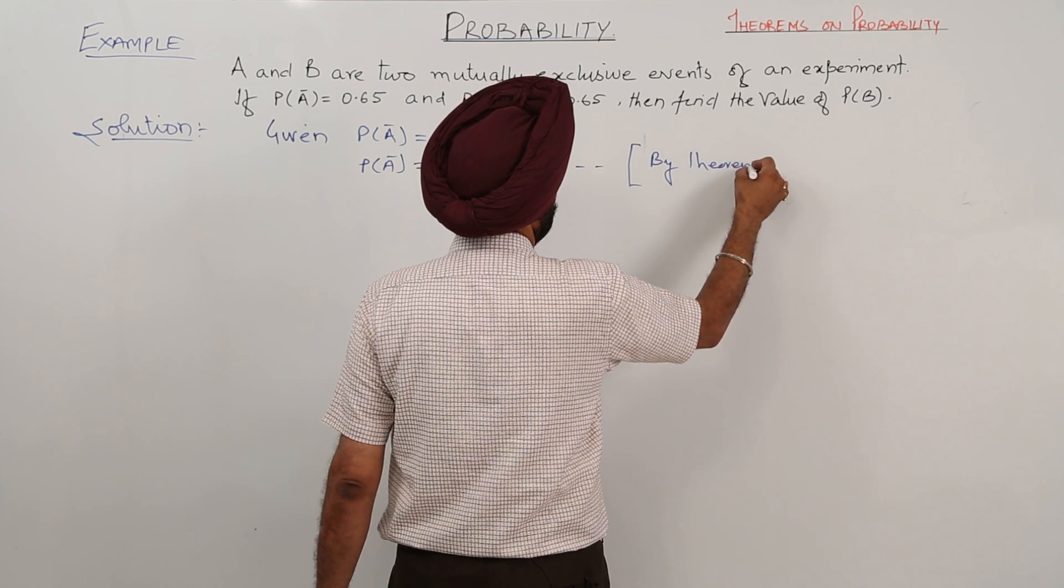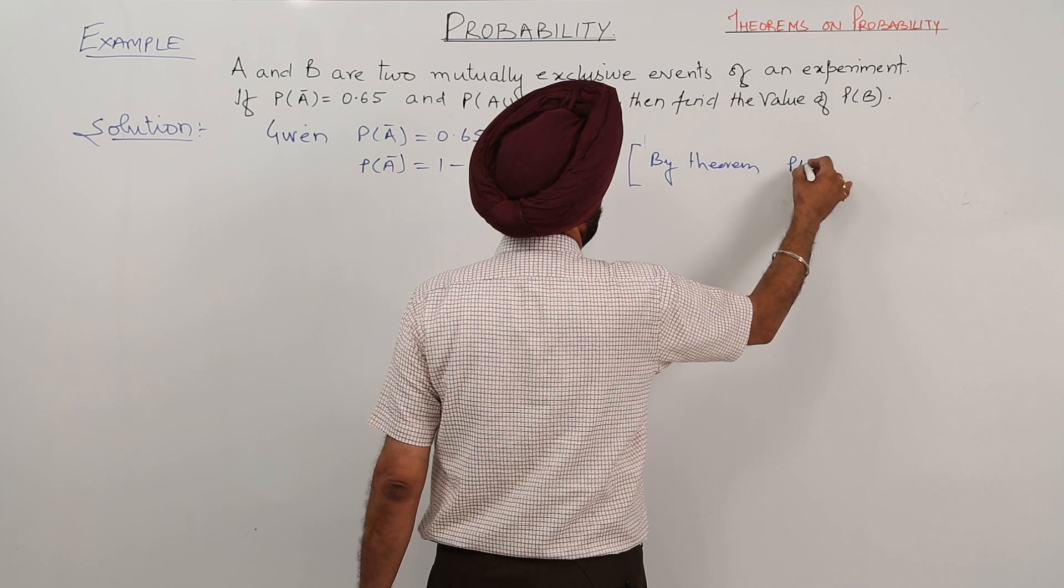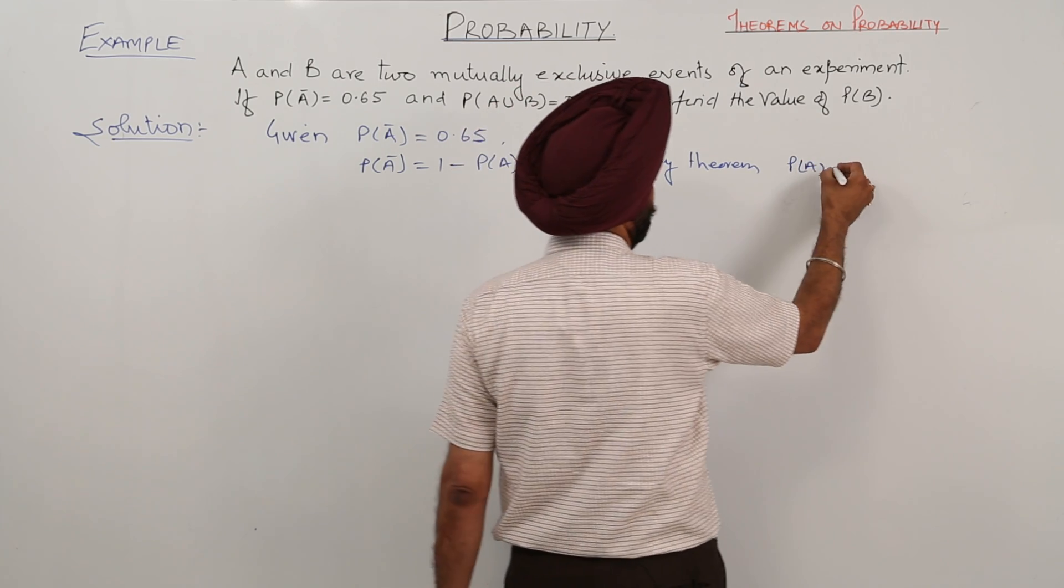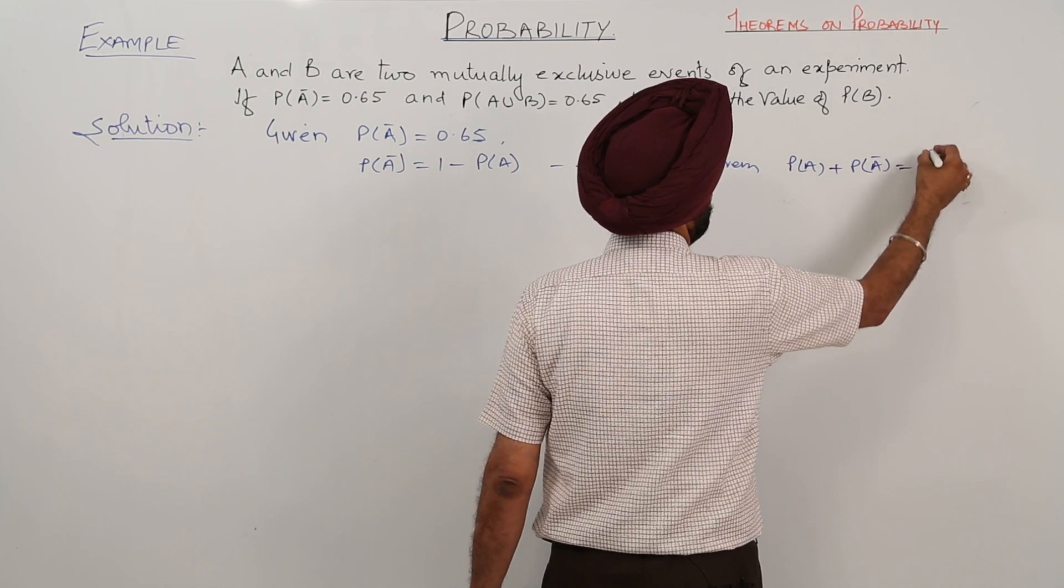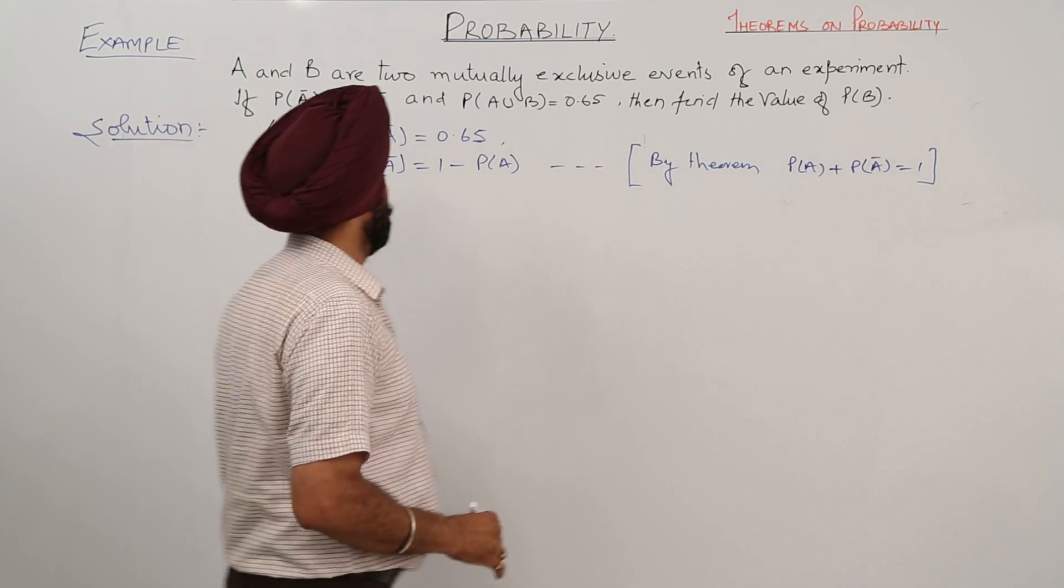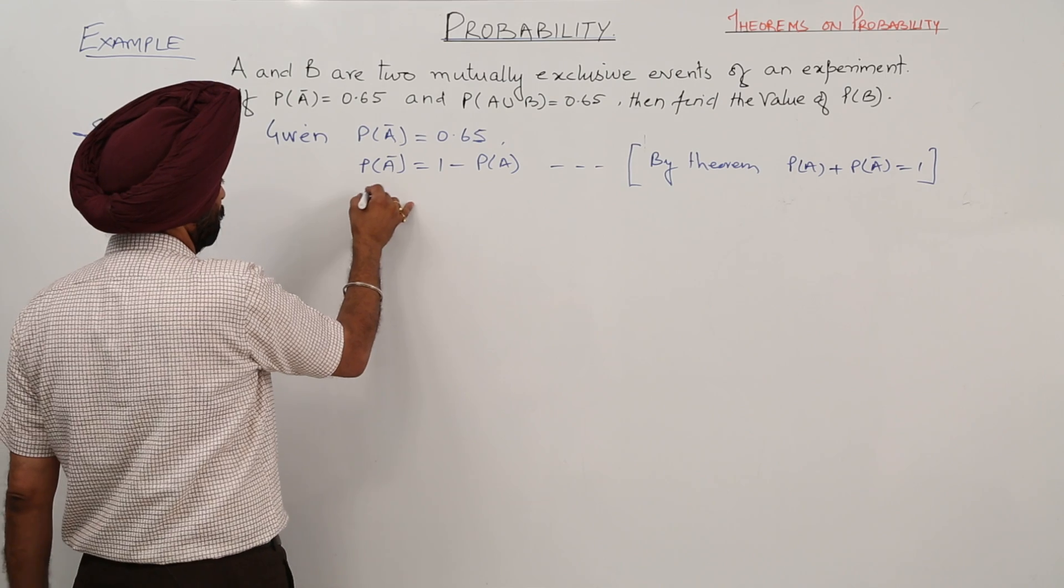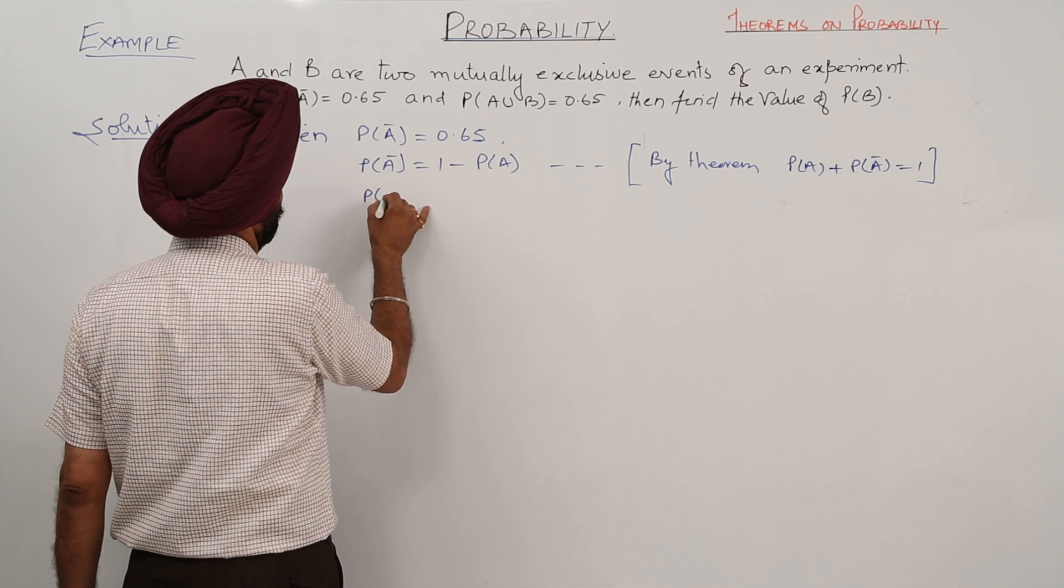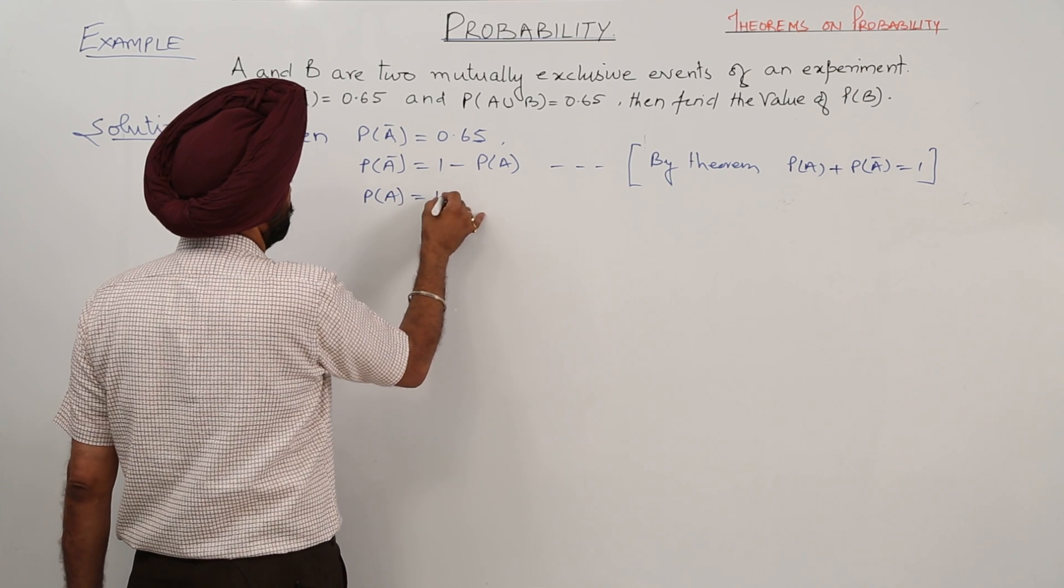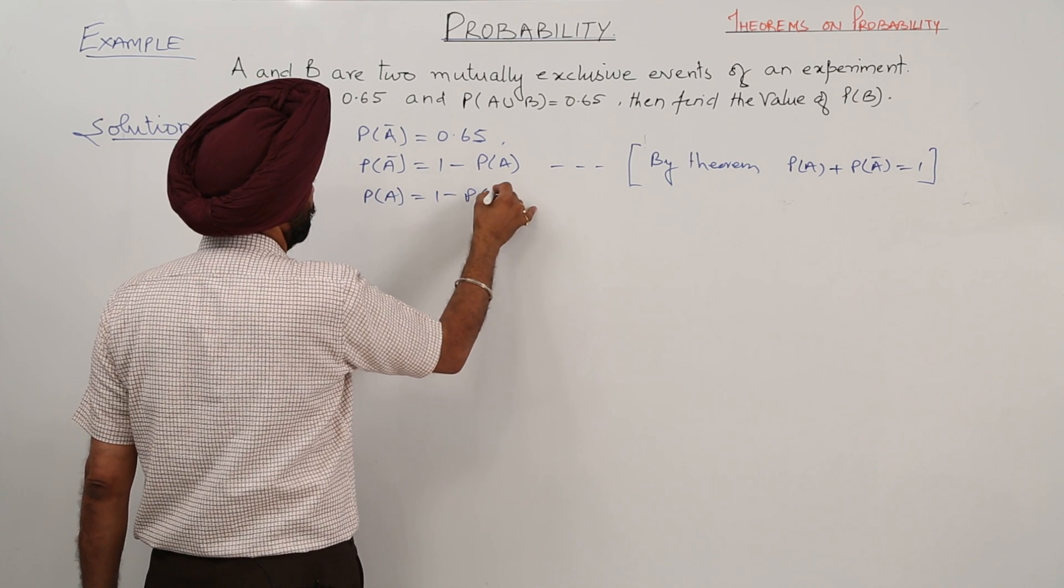By theorem, P(A) plus probability of A' is equal to 1. Therefore, P(A) is equal to 1 minus P(A').